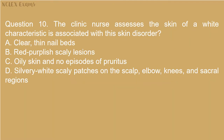Question 10. The clinic nurse assesses the skin of a white client. Which characteristic is associated with psoriasis? A. Clear, thin nail beds. B. Red purplish scaly lesions. C. Oily skin and no episodes of pruritus. D. Silvery white scaly patches on the scalp, elbows, knees, and sacral regions.